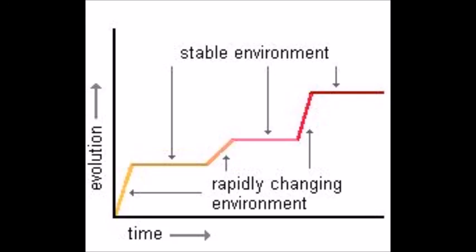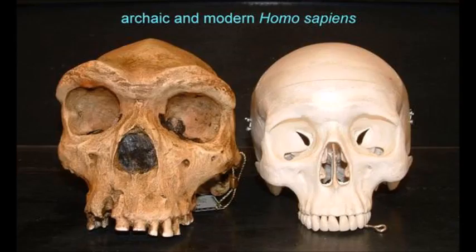Punctuated equilibrium is generally understood as a model of evolution where organisms undergo morphological stasis for long periods of time with intervals of rapid evolutionary change. That doesn't mean the organisms weren't evolving at all, just that their morphology seems generally the same. What is meant by long periods of time is variable. The human species has been around for a long time, around 300,000 years, and hasn't undergone much morphological change.